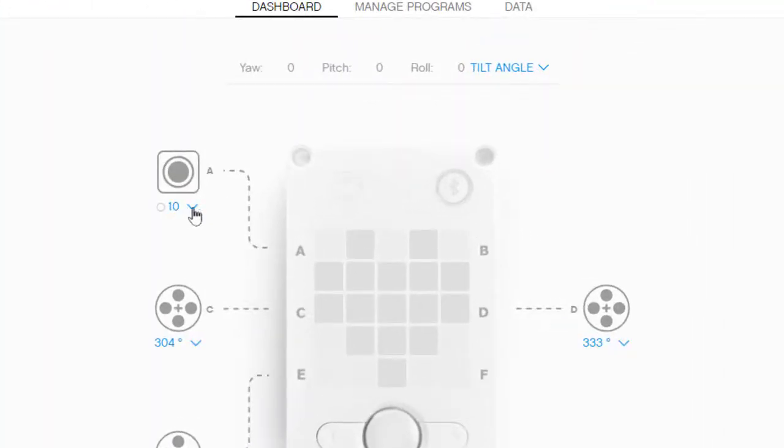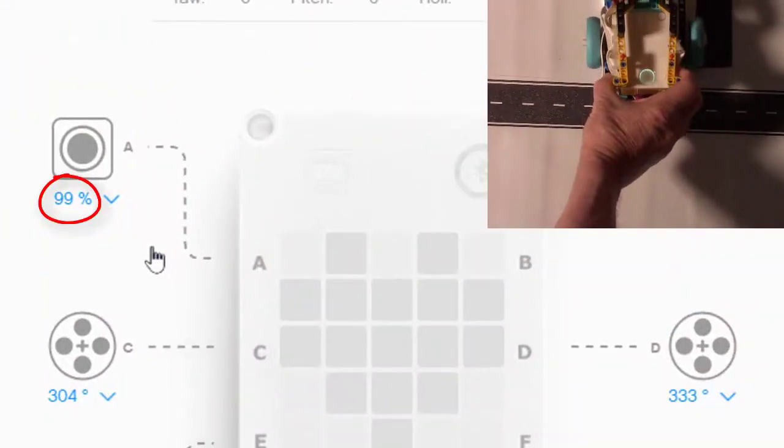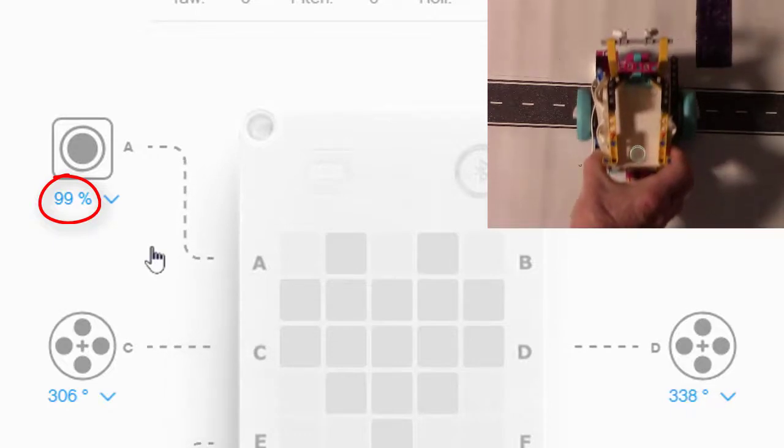We're going to be using the color sensor to look for the edge of the road. Because the road is black rather than a particular color, it's better to have the sensor measure the amount of light that's being reflected from the mat. To see the amount of light the sensor is measuring, we can click on the sensor icon and change it to reflect. Now if we hold the sensor over a white part of the mat, we get a reading of about 99%, indicating that almost all of the LED's light is reflecting off the mat.